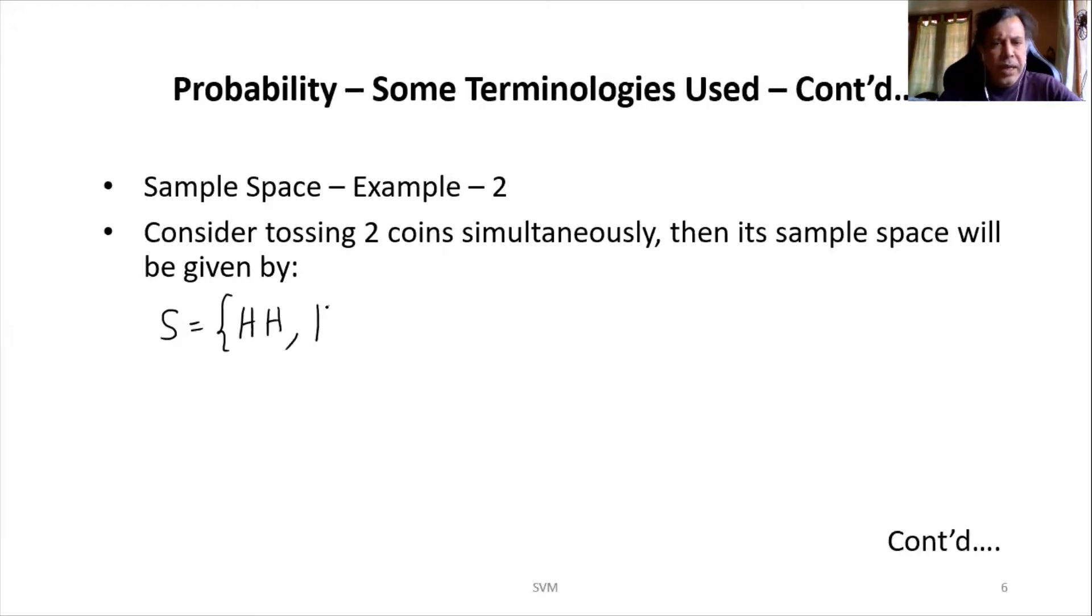Provided we mark both the coins as number one, number two like that, right? Then first coin can give me a tail, second can give me a head. And both the coins can give me tails also. So that means in this case, the number of possible outcomes—